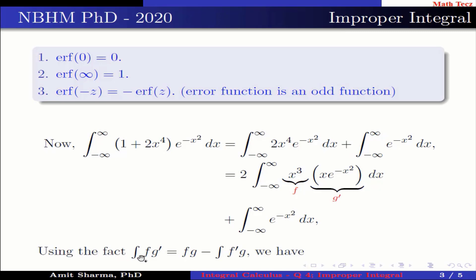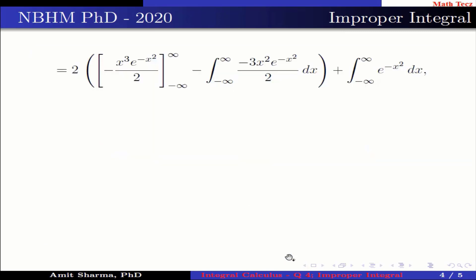Using the fact that ∫f·g′ = f·g − ∫f′·g, we have 2·[−x³·e^(−x²)/2]_{−∞}^{∞} − 2·∫_{−∞}^{∞} (−3x²)·(−e^(−x²)/2) dx, plus ∫_{−∞}^{∞} e^(−x²) dx. Here f = x³ and the integral of g′ gives −e^(−x²)/2.